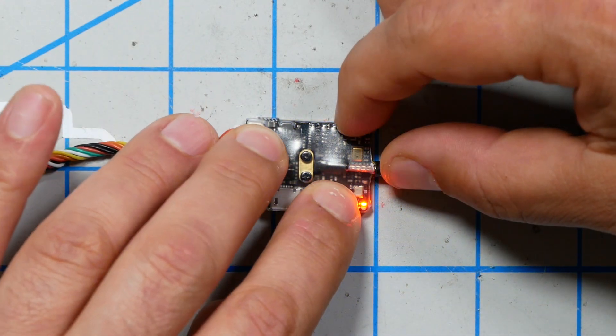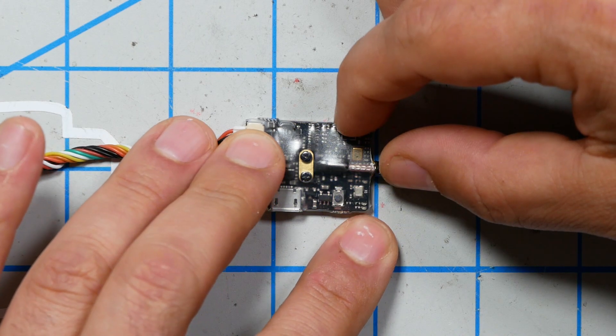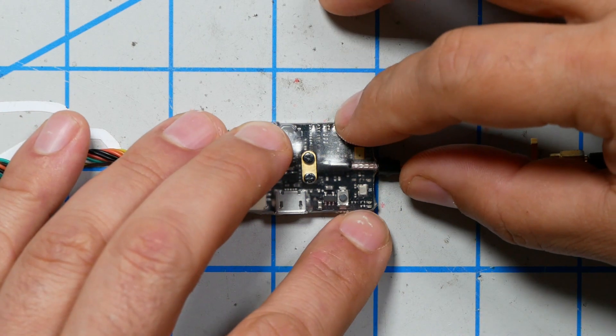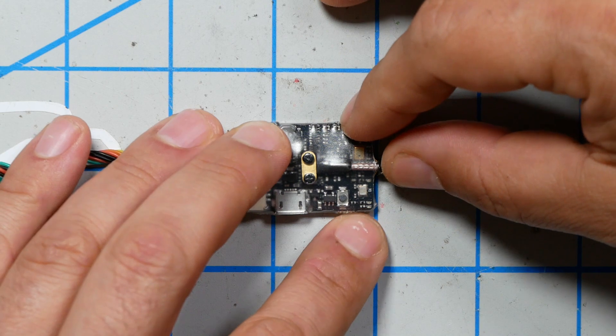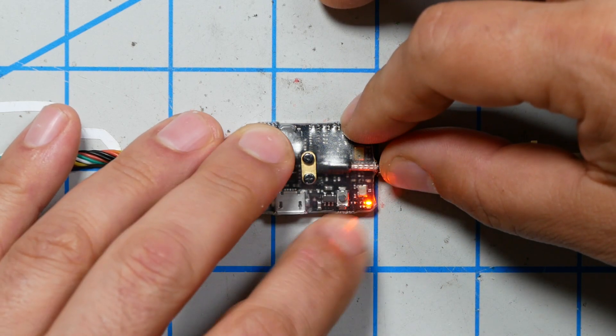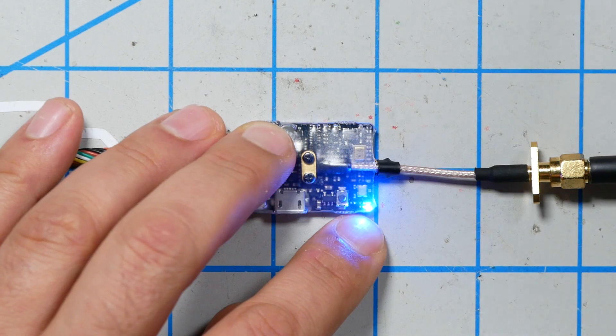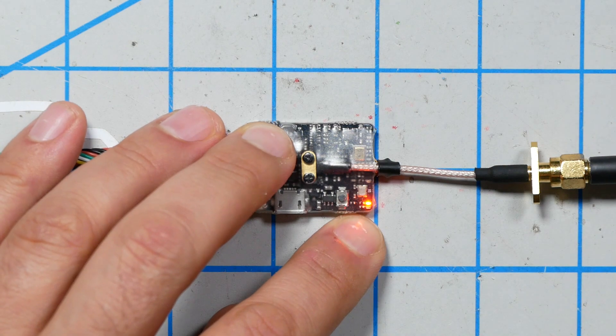I'm going to hold this down for three seconds until the red light goes out. And now we get single red, single blue. Single red means channel select mode. Single blue means channel one. We're going to do it again. And two reds means band select mode. And single blue means A band.